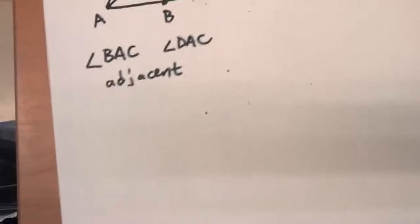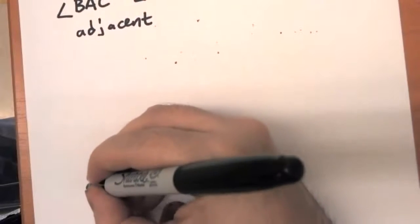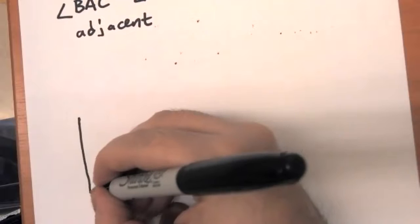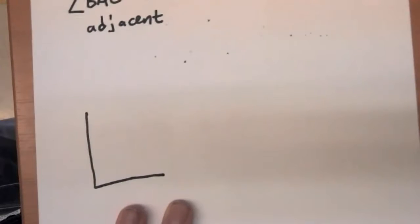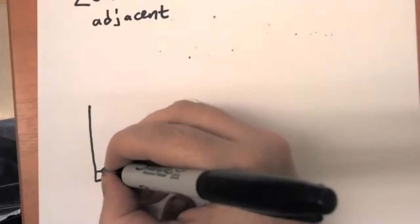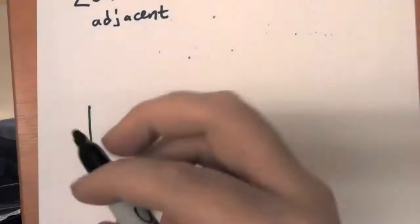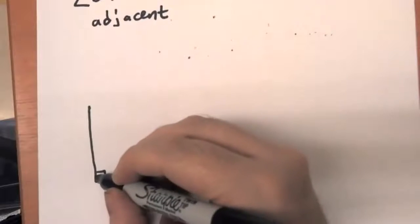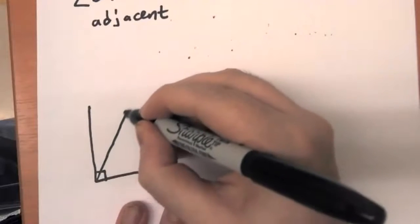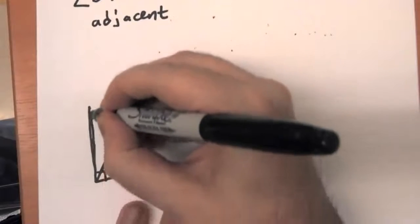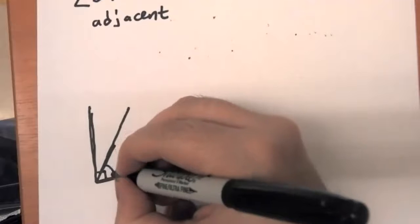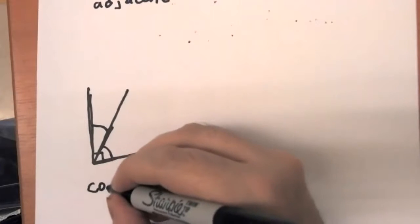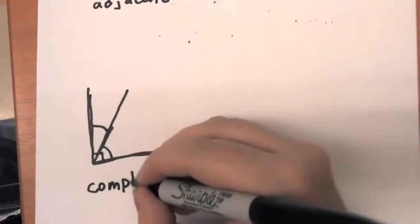Another really common idea: if I have a right angle here — I want to make sure I put in this bracket so that we know that is exactly a 90-degree angle — and if this angle is split in half so that I have two angles that together form a 90-degree angle, I'm going to call those angles complementary.